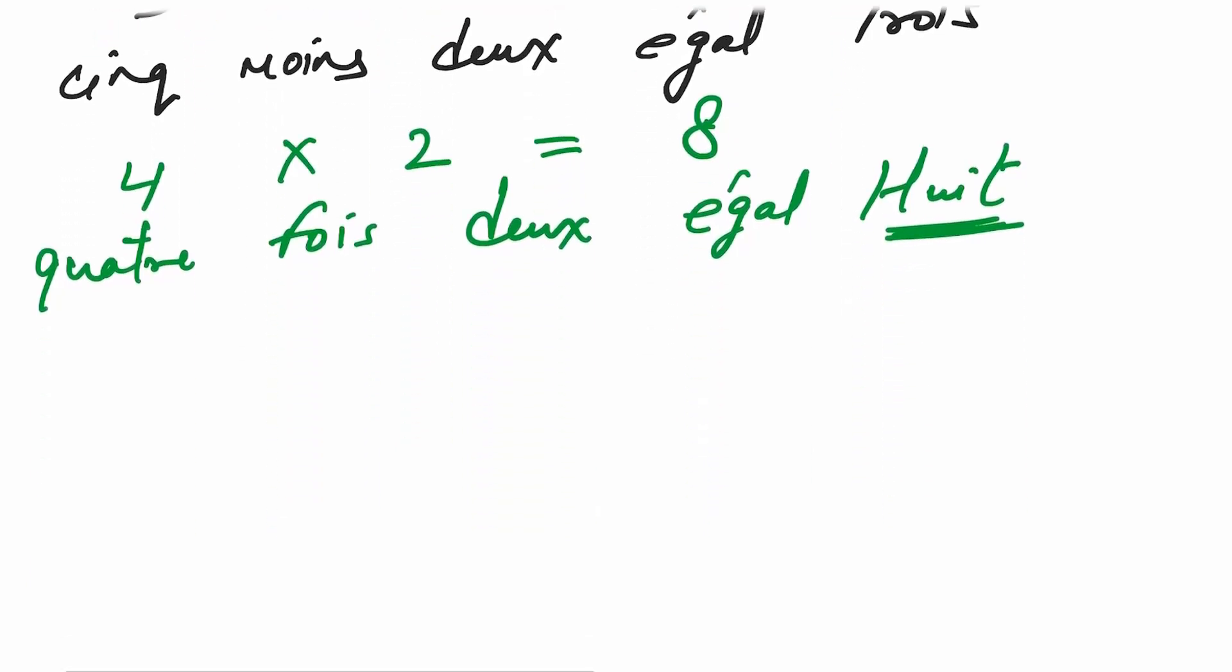So let's revise the signs once again. Plus was? Plus. Minus is? Moins. Multiply is? Fois. And is equal to is? Égale.